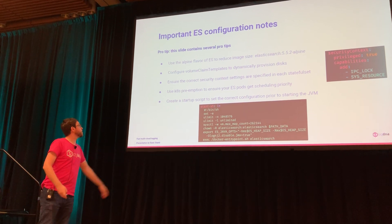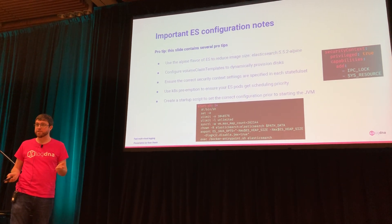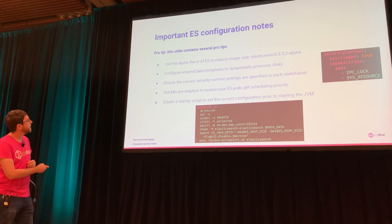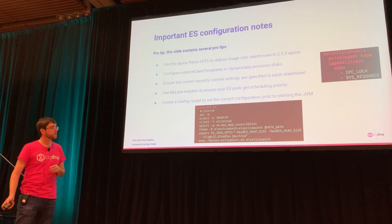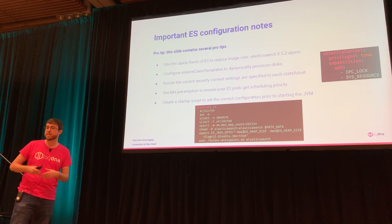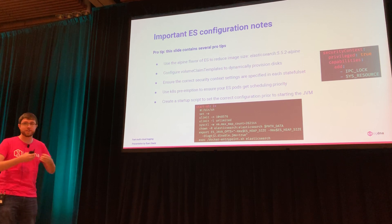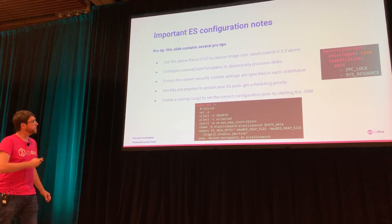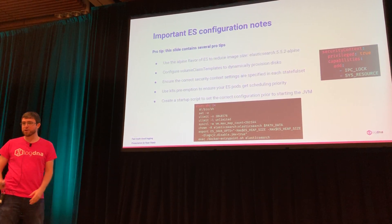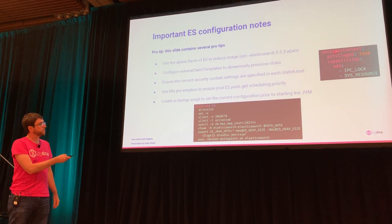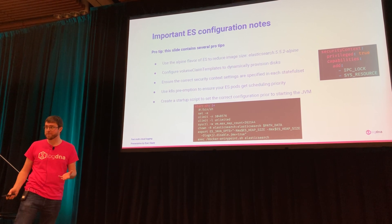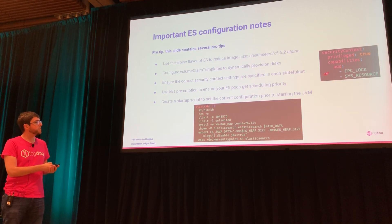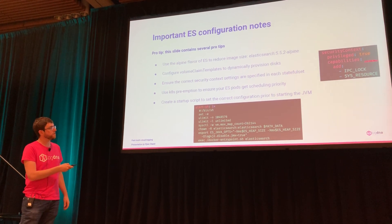For configuration, we use Elasticsearch Alpine just because it's nicely small — generally good Docker practice to keep your images small. Volume claim templates is a field inside of the StatefulSet, which is a Kubernetes resource type that allows for disk and identity. It's really important because it allows you to dynamically request and provision disks, so you don't have to manage each disk yourself. There are also important security context settings you need — you need to add a security context for privileged containers, which means privileged: true. A security officer may not like this, but you need it to run Elasticsearch.